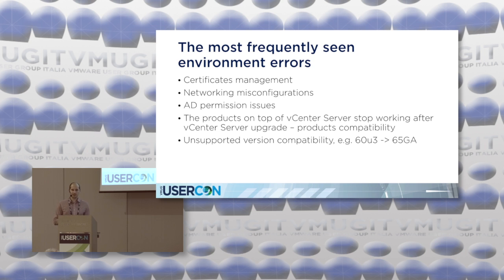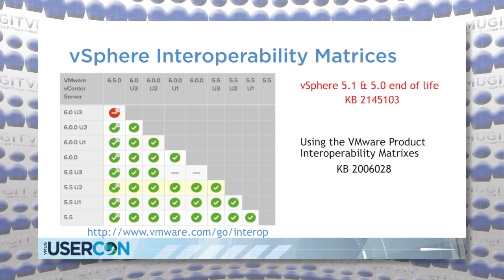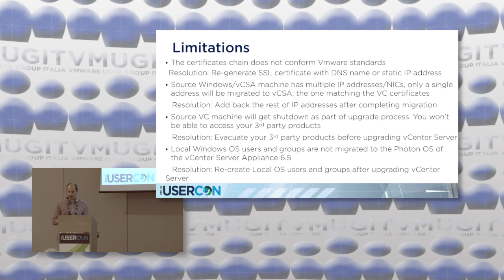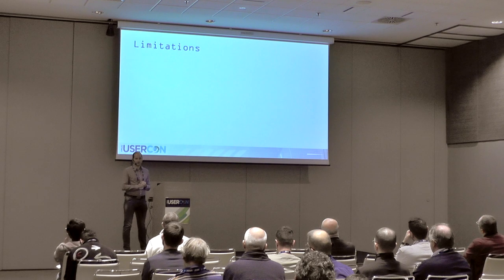Unsupported version compatibility is another source of errors. For example, many customers try to upgrade from 6.0 U3 to 6.5 GA, although this is not supported. Check the matrices — we announced that this path is not supported. Keep in mind that version compatibility can play tricks. Lots of combinations are supported, but there are a few which are not, and you should know them upfront before upgrading.